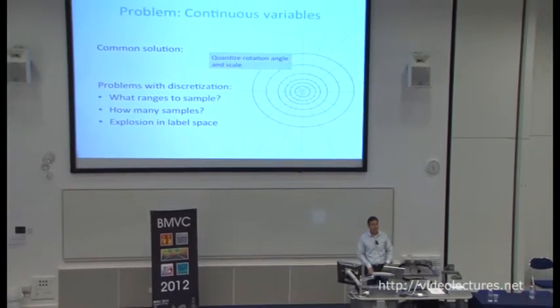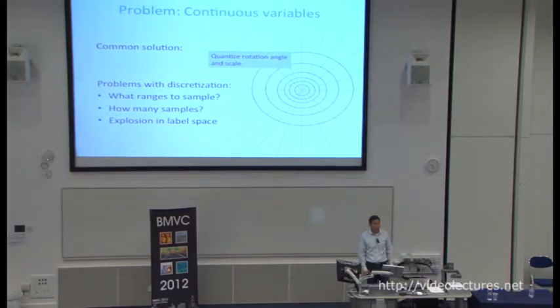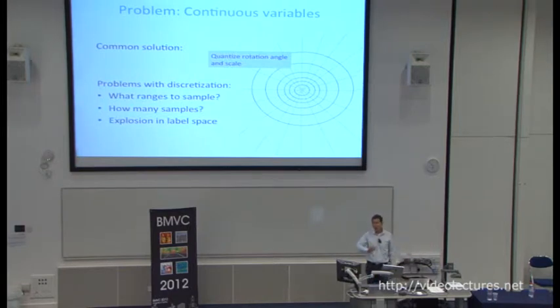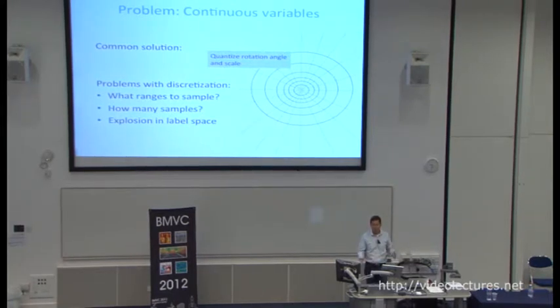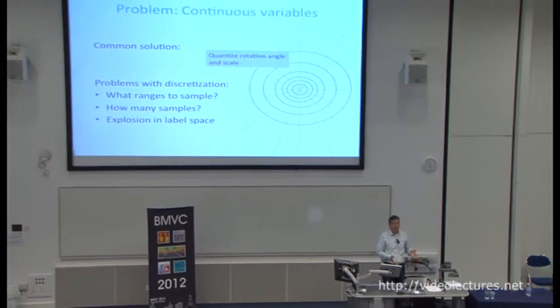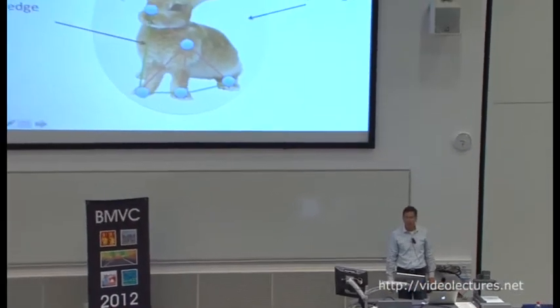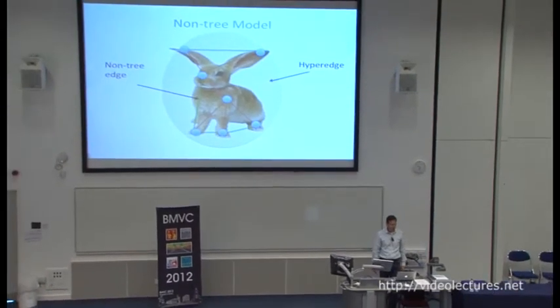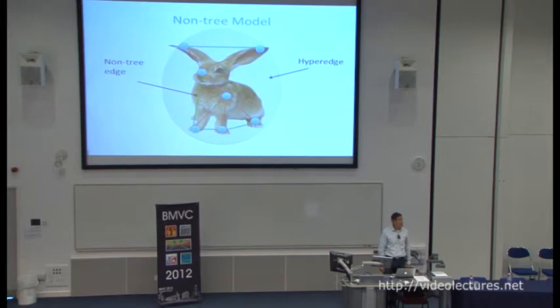I'll present this as a general problem rather than just concentrating on pose. The question is what range to sample when scaling the model, or how many samples to take over rotation. Within the context of tree-based deformable part models, this explodes the search space because we have to quantize over these different variables. In our non-tree model, the tree constraints are shown in red and the non-tree constraints in green. The non-tree edges can encode scale or rotation consistency between parts, while red constraints capture kinematic constraints. There is also a hyperedge that defines properties for the whole model.